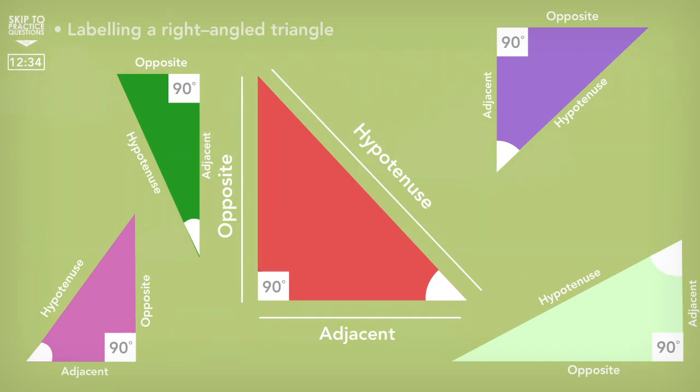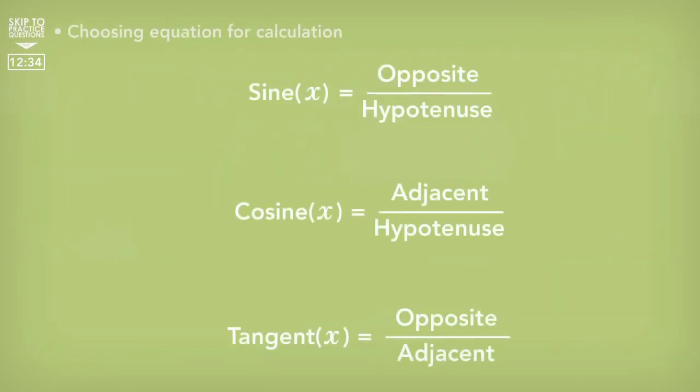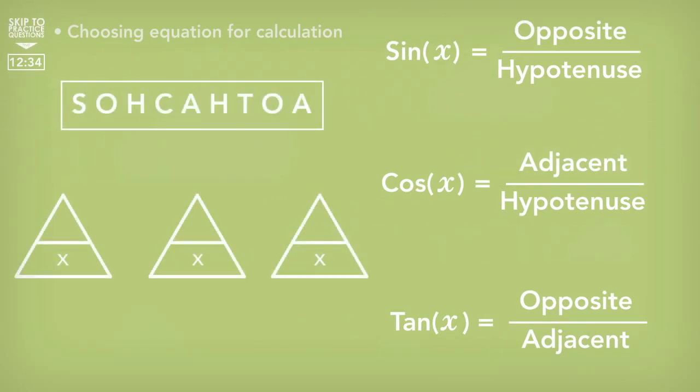Okay, so now that we know how to label these triangles, here are three equations that we will need: sine, cosine, and tangent. And from now on, I will refer to these as sine, cos, and tan. A popular method to help use these equations is the SOHCAHTOA method. This will not be given to you when taking the exam, so they have to be remembered. It's basically a funny sounding word that we can use to remind us of the equations. SOHCAHTOA.